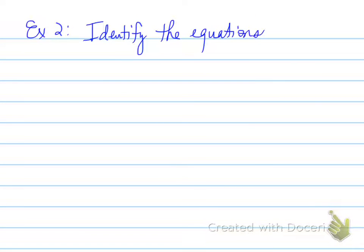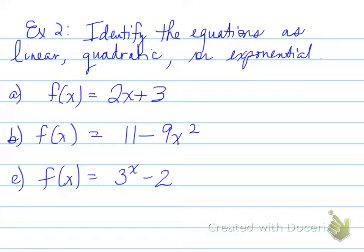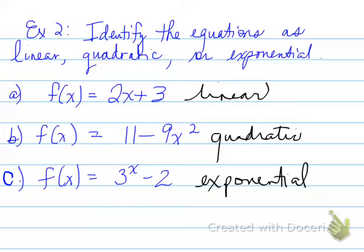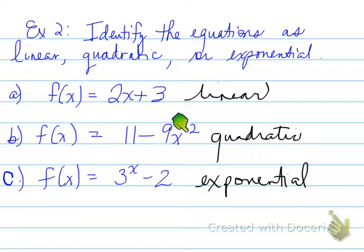Example two: identify the equations as linear, quadratic, or exponential. The first equation has the highest exponent on x equal to 1 — one delta, one degree, so it's linear. The second has x-squared as the highest power — degree 2, second differences, so it's quadratic. The third is exponential because x itself is the exponent. That's how you identify each type from an equation.